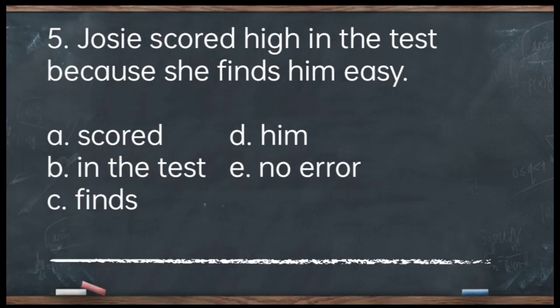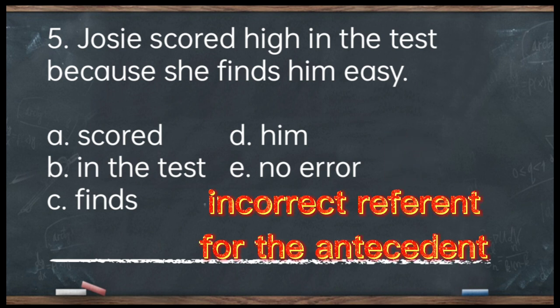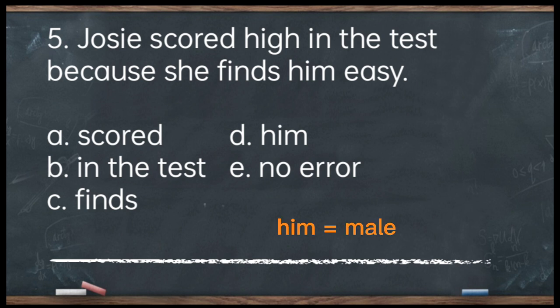Number 5. Juicy scored high in the test because she finds him easy. A. Scored. B. In the test. C. Finds. D. Him. E. No error. The answer is letter D — 'him.' Him is only used for a person, a male in particular, and the test is not a person. The correct pronoun referent for 'test' should be 'it.' Corrected: Juicy scored high in the test because she finds it easy.